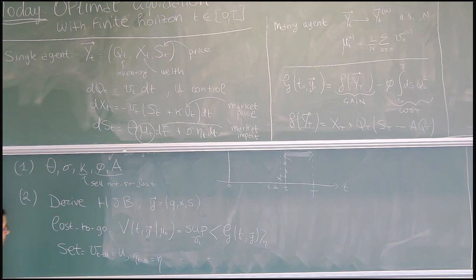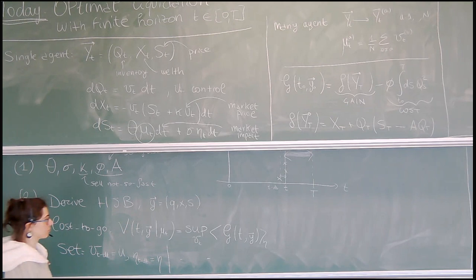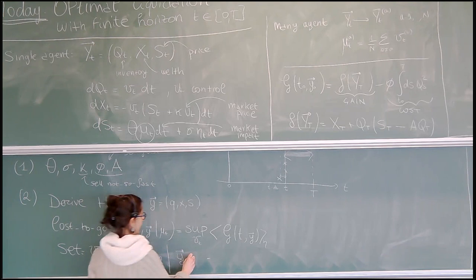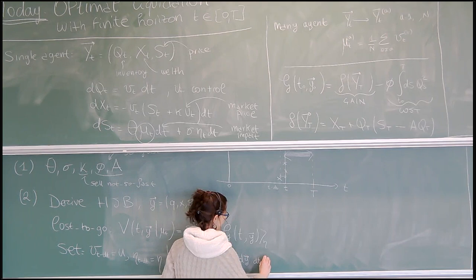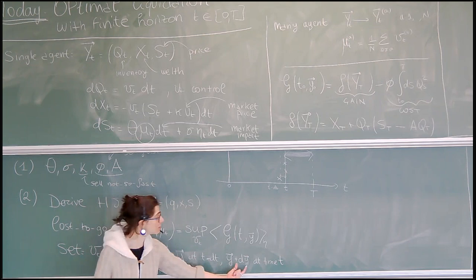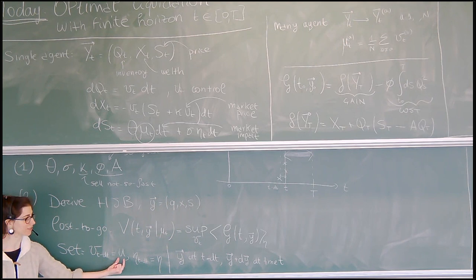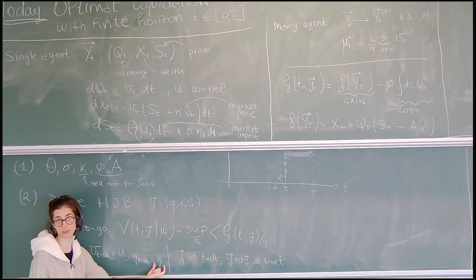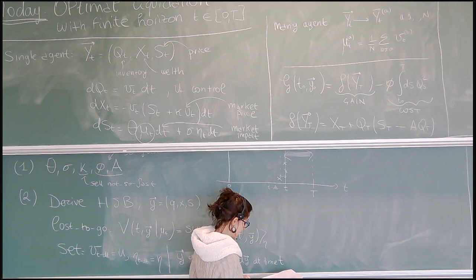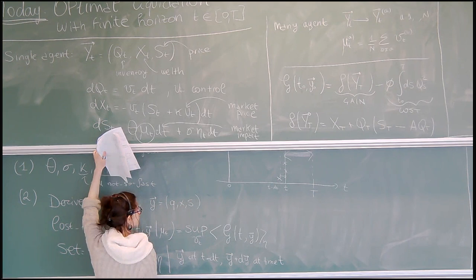I just want to drop the dependence on t minus dt. If I start at a point Y at time t minus dt, at time t I will be at a given point Y plus dY. This dY will depend both on the velocity U that I choose in this small interval dt and on the noise in this small interval dt. So I will solve an optimization problem for this velocity in the interval dt, averaging over the noise in this small interval dt.